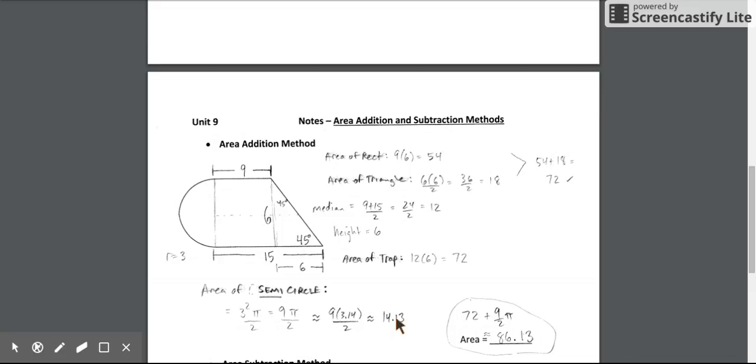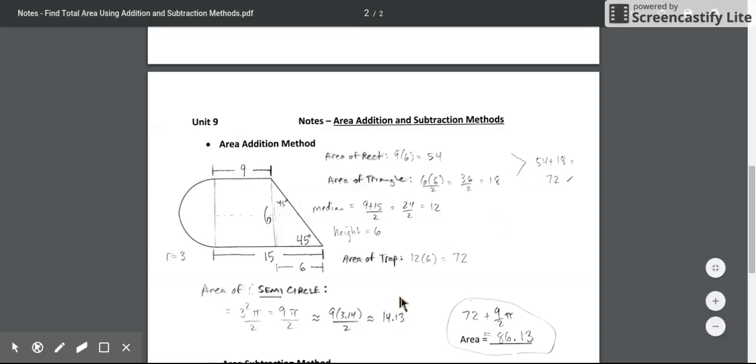So now we have all the individual areas. If I combine my rectangle and triangle areas, 54 plus 18 give me 72. If I tack on the semicircle area, just add that to it, then we get an area that's approximately 86.13.